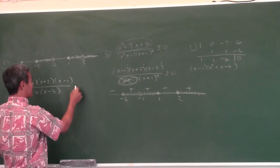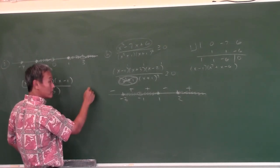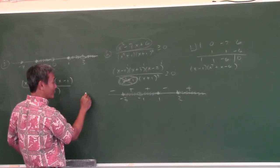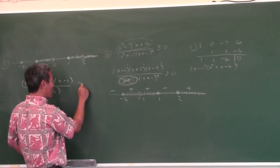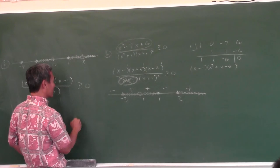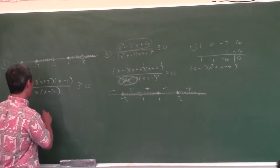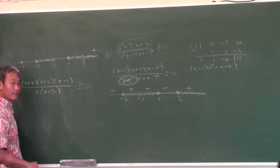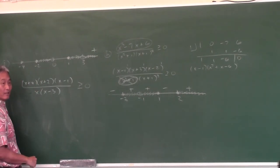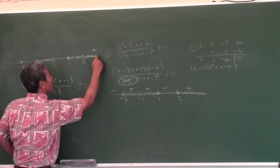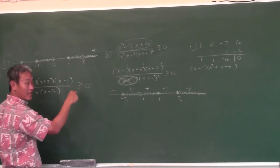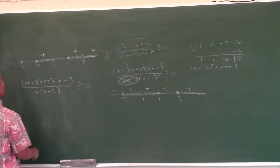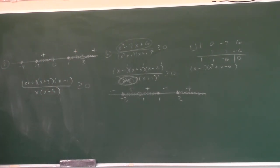Is it going to be greater than or equal to, or less than or equal to? How do you know? If the leading coefficients are positive, the right end can be positive. And if you're shading it in, you want greater than zero, because you're shading in the positive ones.